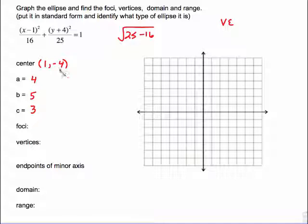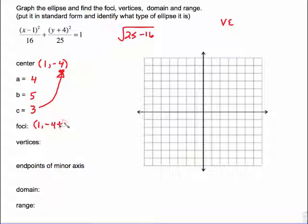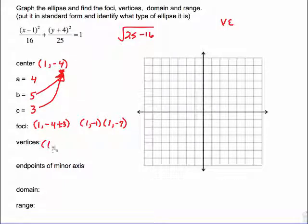Because it is vertical, I know I'm adding and subtracting onto the y part of the center to get both the foci and the vertices. The foci: 1, negative 4 plus or minus 3. Cleaning that up: 1, negative 1 and 1, negative 7. Vertices: because it is a vertical ellipse, it's the b value put onto k. So this will be 1, negative 4 plus or minus 5. Cleaning that up: 1, negative 9 and 1, positive 1.